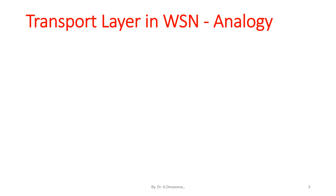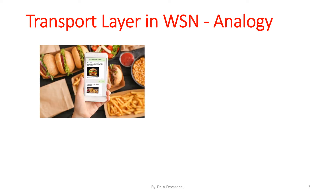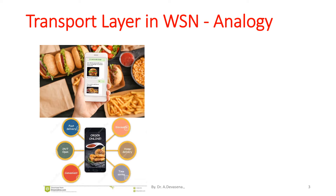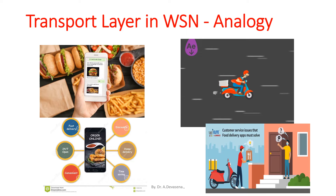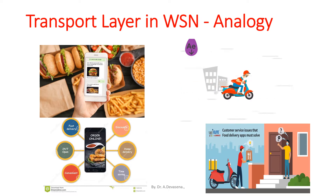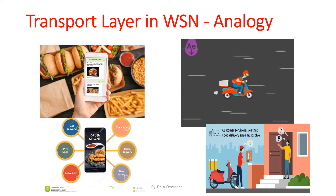Let us discuss a transport layer analogy. In this diagram we are seeing the food that is available in a restaurant. It has to reach the destination, that is, the customer, by ordering food through online. The food available in the restaurant is carried by the delivery boy, who delivers the food to the customer. Likewise, the data available in a sensor node has to reach its destination through the transport layer, which we will discuss in this topic.